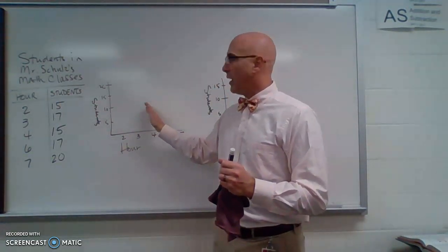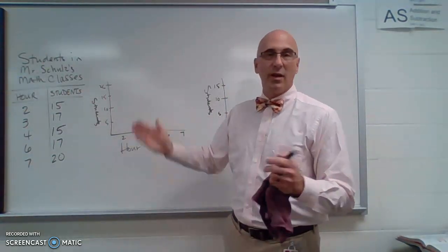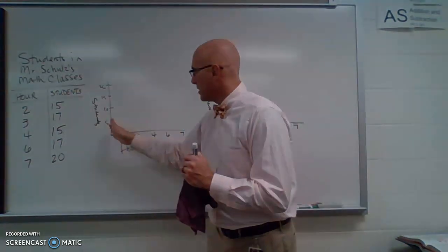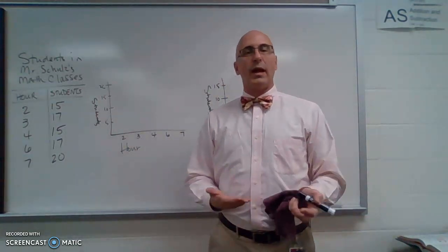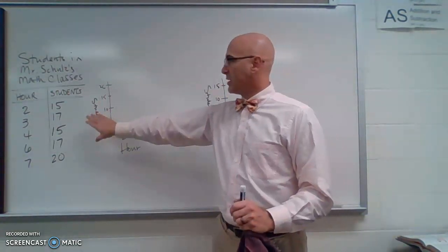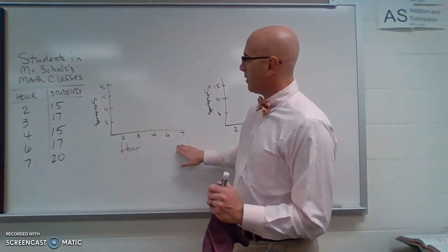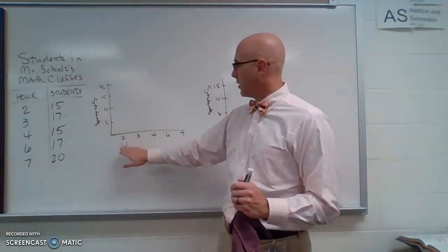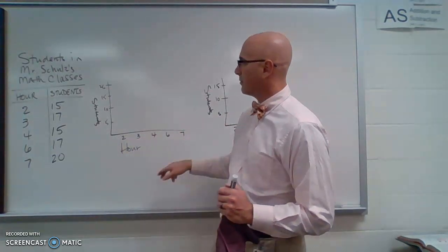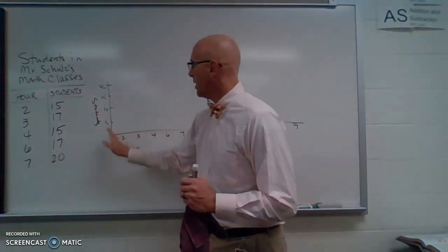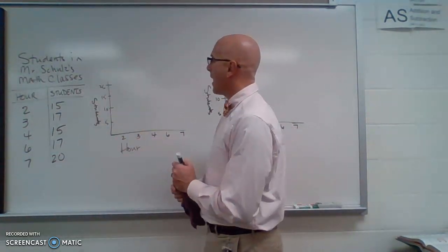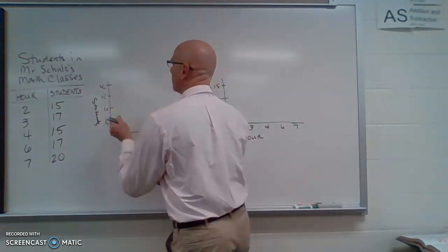And what I am going to do here on this grid, on these two axes, I am going to create a bar graph that represents this data. So on the bottom, on the horizontal axis, I have the hour period, 2, 3, 4, 6, 7, corresponds to this column. And then along here, I have the number of students.